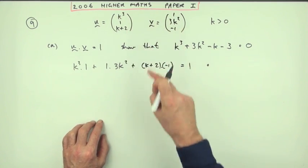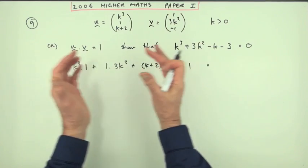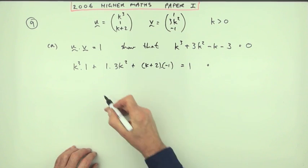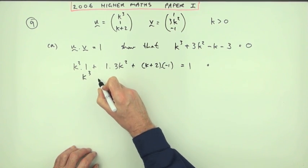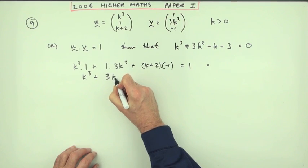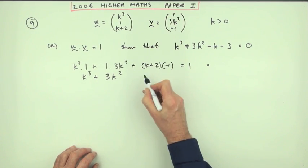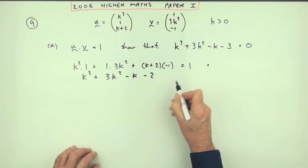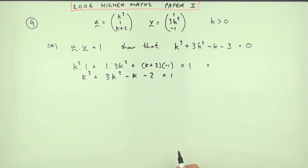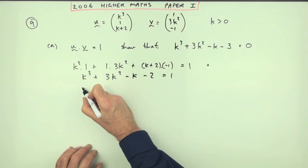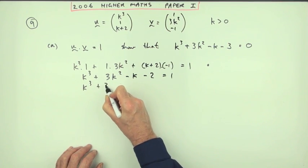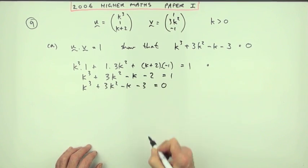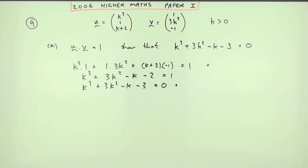There's the first mark for knowing how to do the scalar product — multiplying corresponding components and adding them to a single number. The next mark is for simplifying: we have k³ + 3k² minus k minus 2 equals 1. Take that across, and we get k³ + 3k² - k - 3 = 0. There's the second mark for that part.